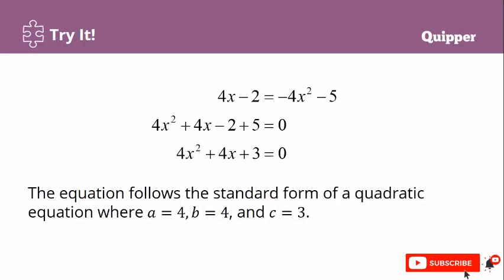We have 4x² plus 4x plus 3 equals 0. From here, we can identify the values of a, b, c: a is equal to 4, b is equal to 4, and c is equal to 3.